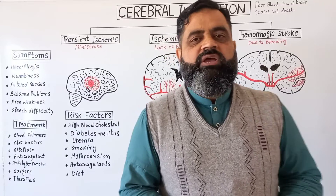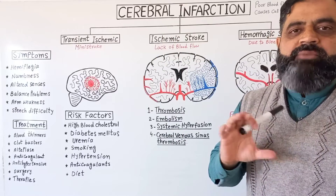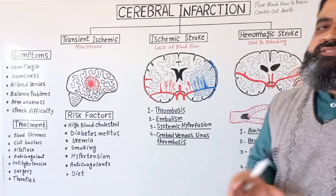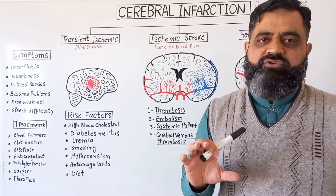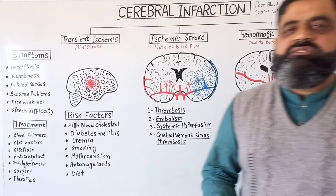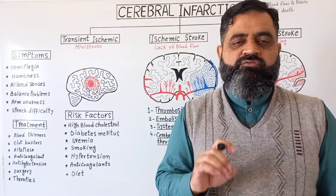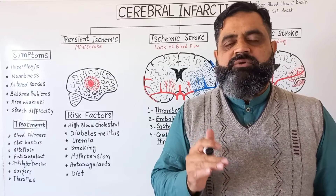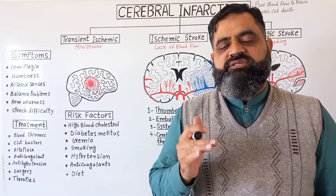Cerebral infarction, which is known as stroke — if you look at the meaning, cerebral refers to the brain or any part of the brain, especially the cerebrum. Infarction is known as cell death. When there is a death of the tissues of the brain, that is known as cerebral infarction, which is usually due to poor blood flow to the brain. When there is a reduced or completely absent supply of blood to any part of the brain, it causes the death of brain tissue and leads to a stroke.